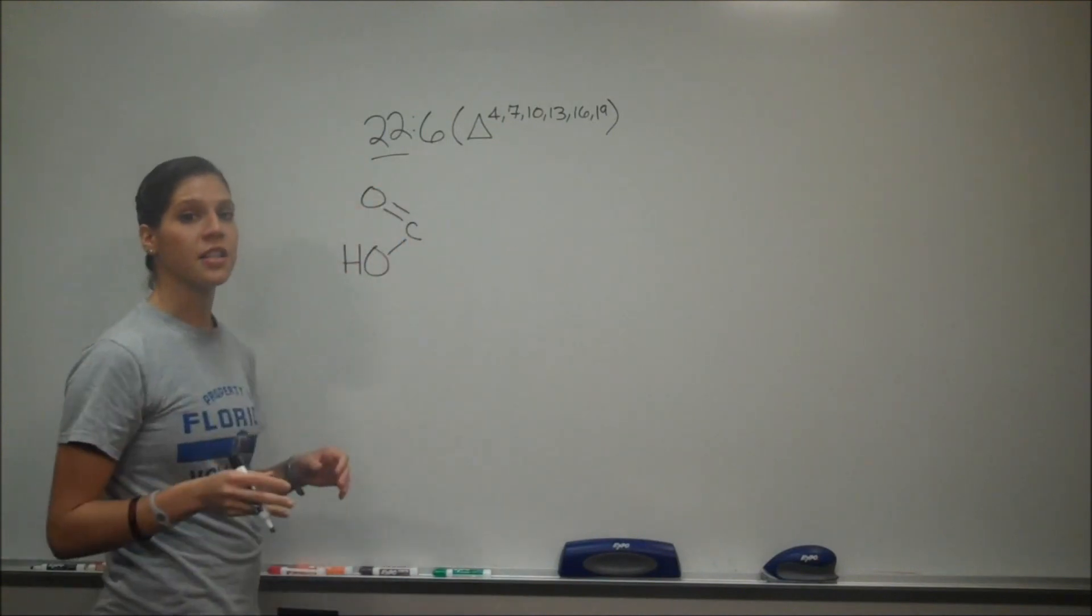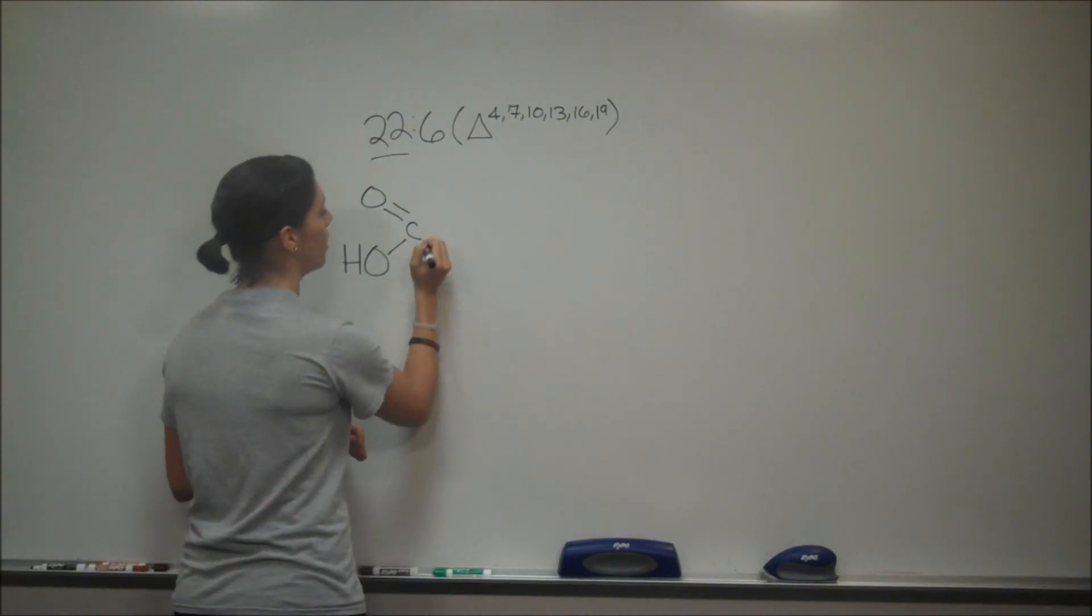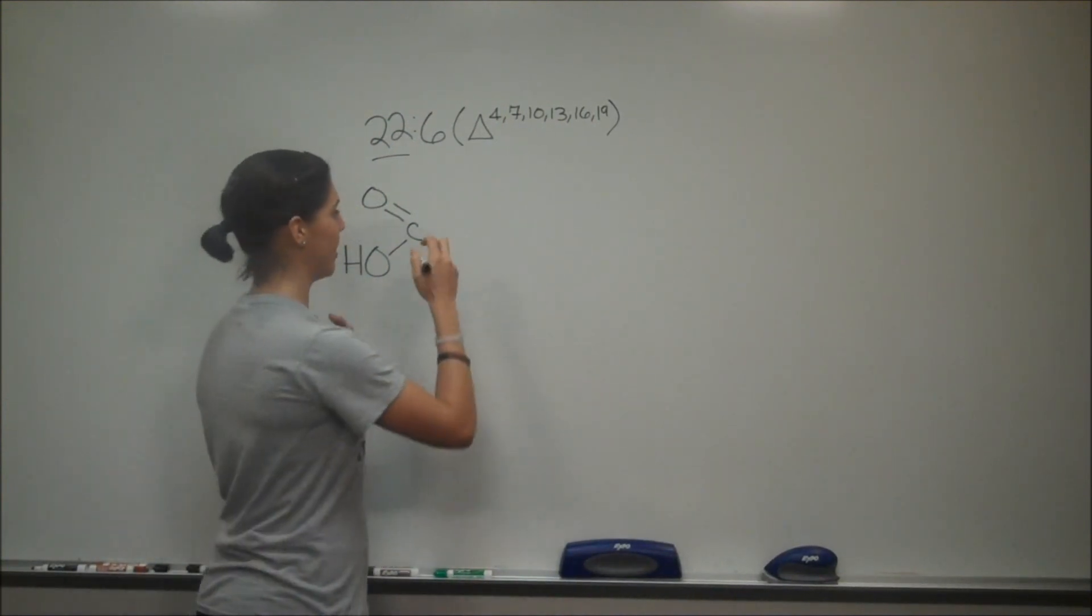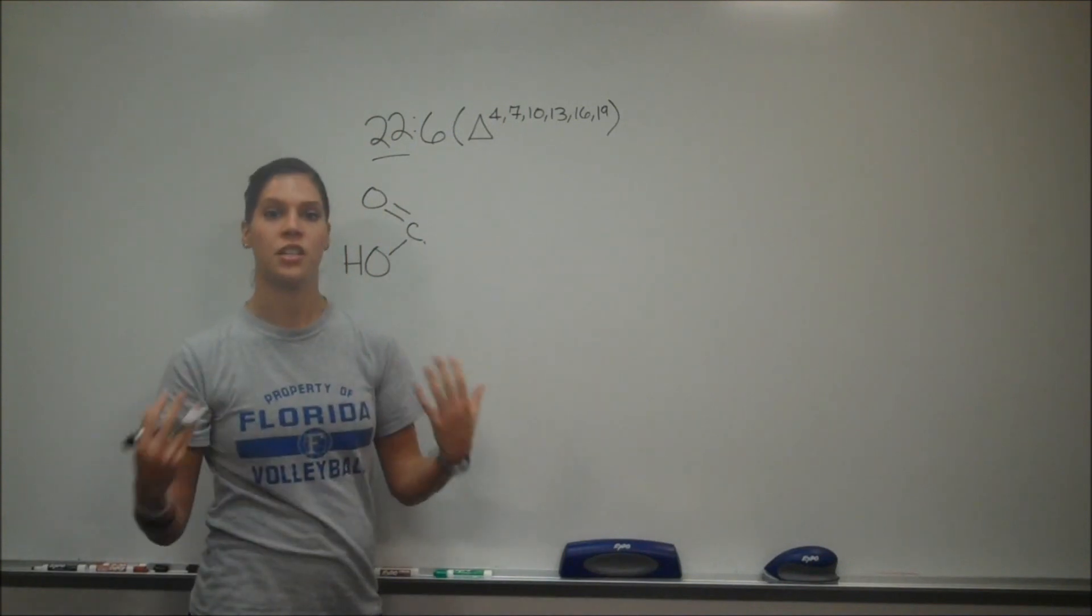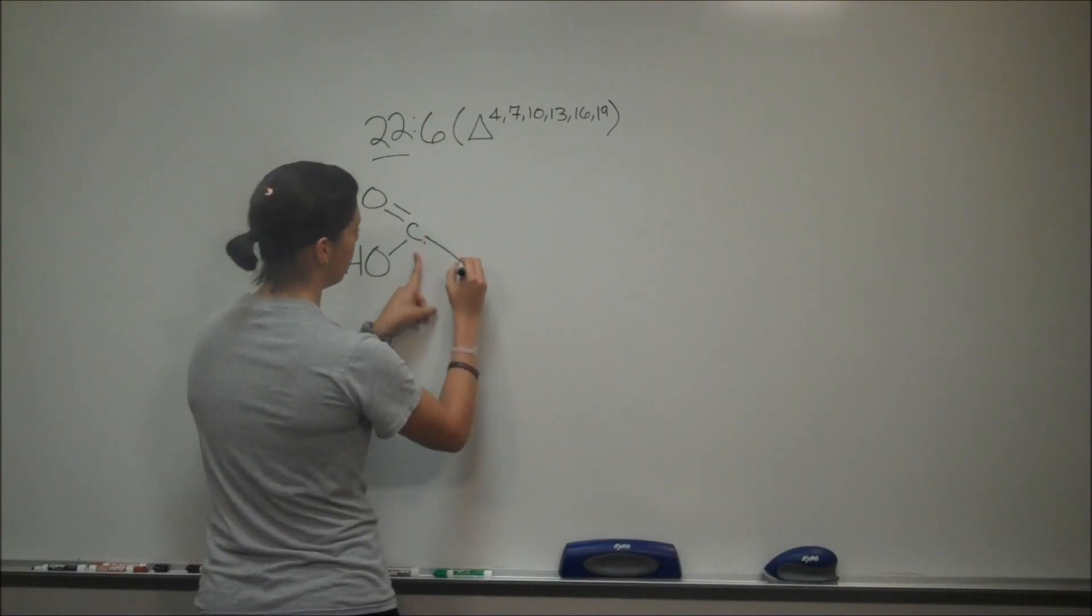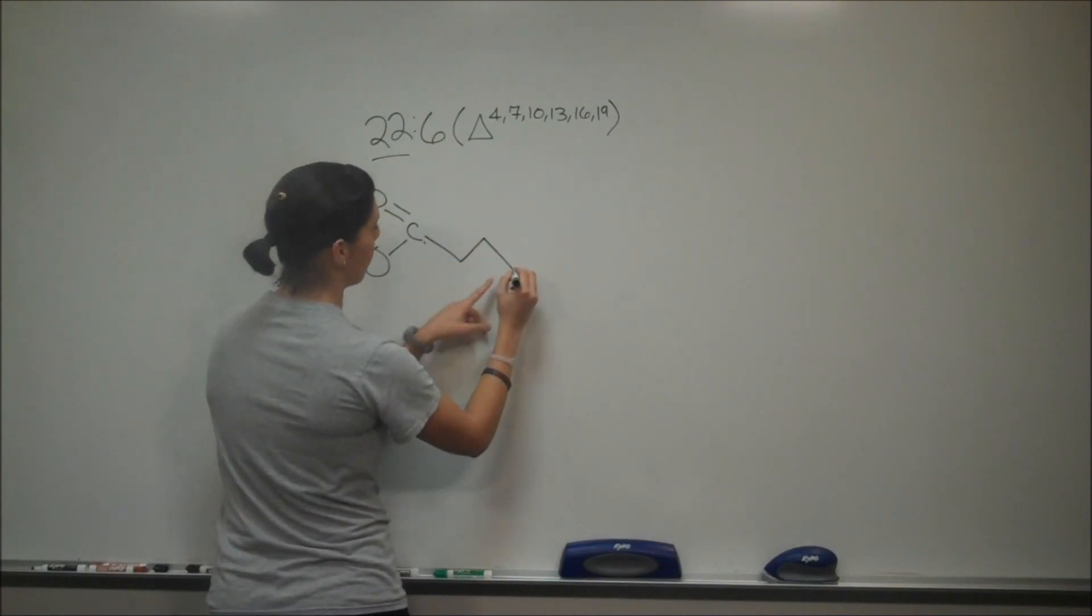Here's your carboxylic group, and this is carbon one. So when you want to write your fatty acid chain, you're going to start extending your chain in a zigzag formation until you reach a double bond. For example, this is carbon one, so now you're going to extend to carbon two, three, and four.